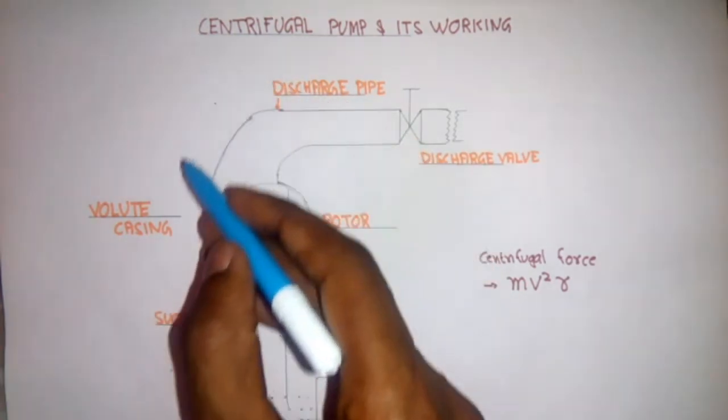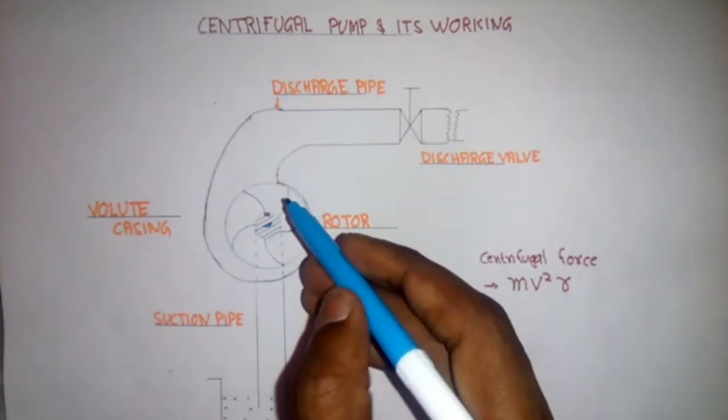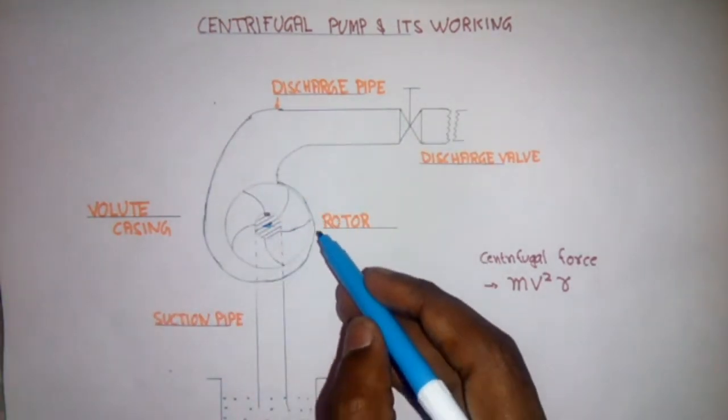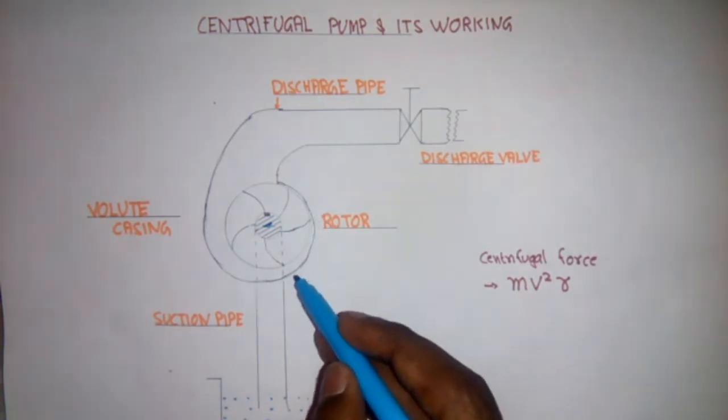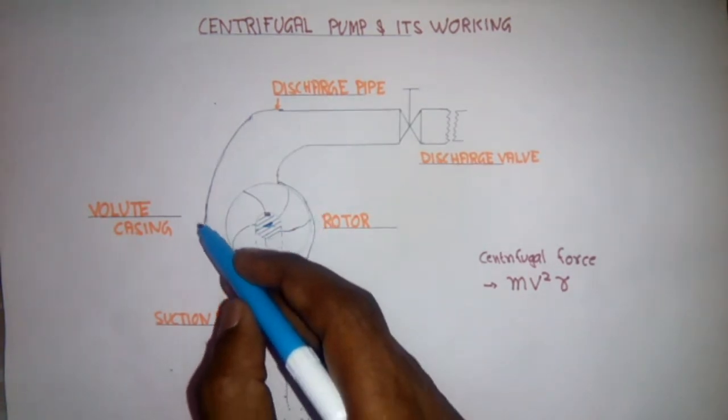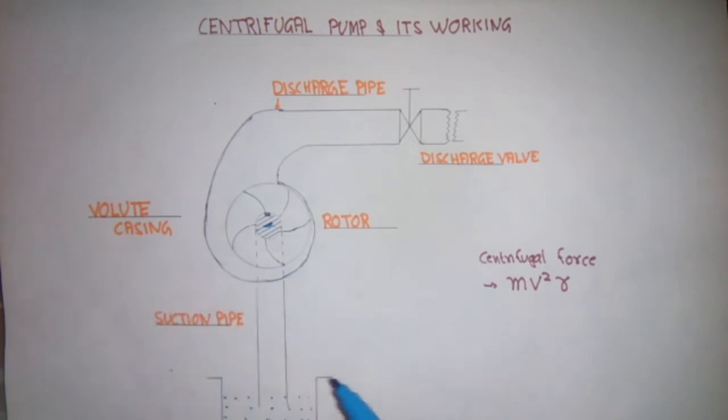Now, volute casing. The name is given volute casing because of its volute shape. You can see here area is increasing slowly, that's why it's known as volute casing.